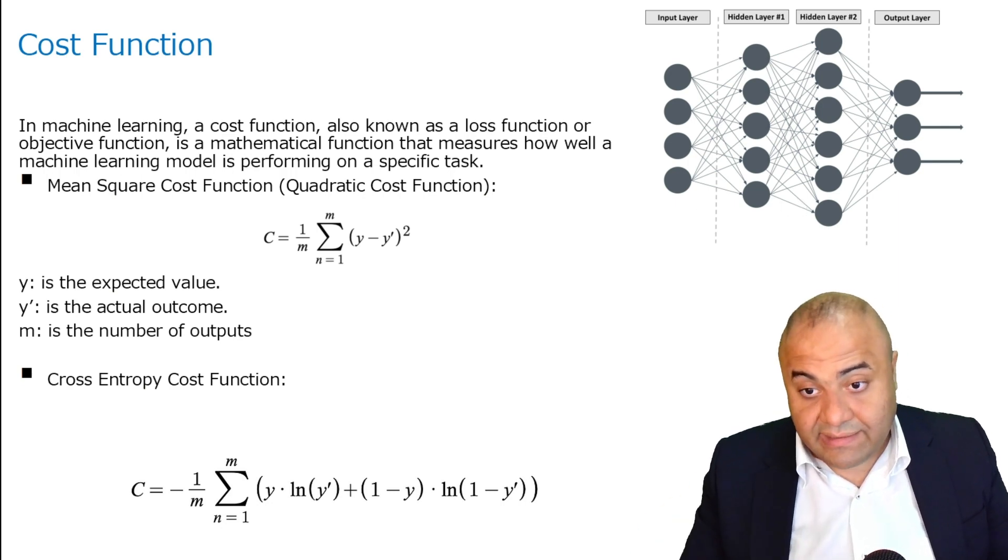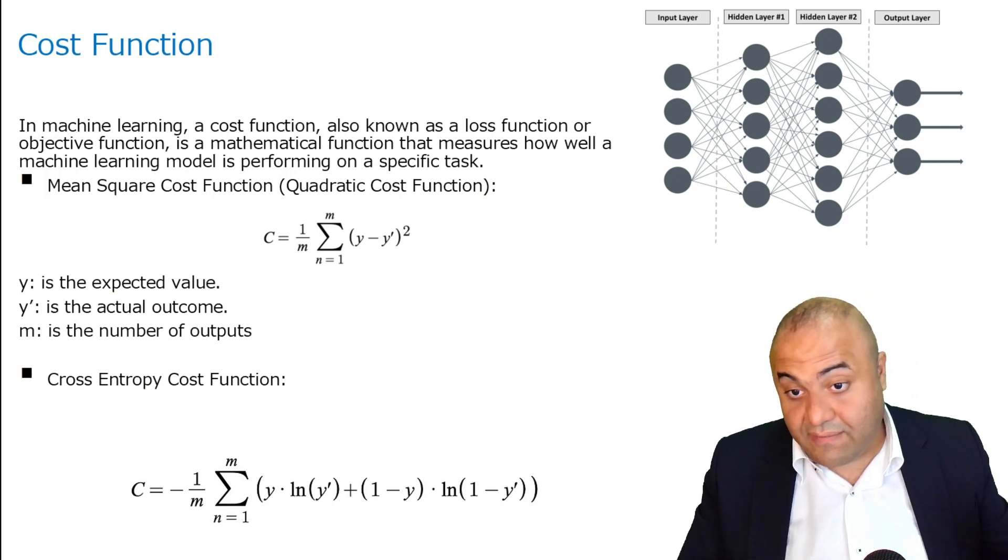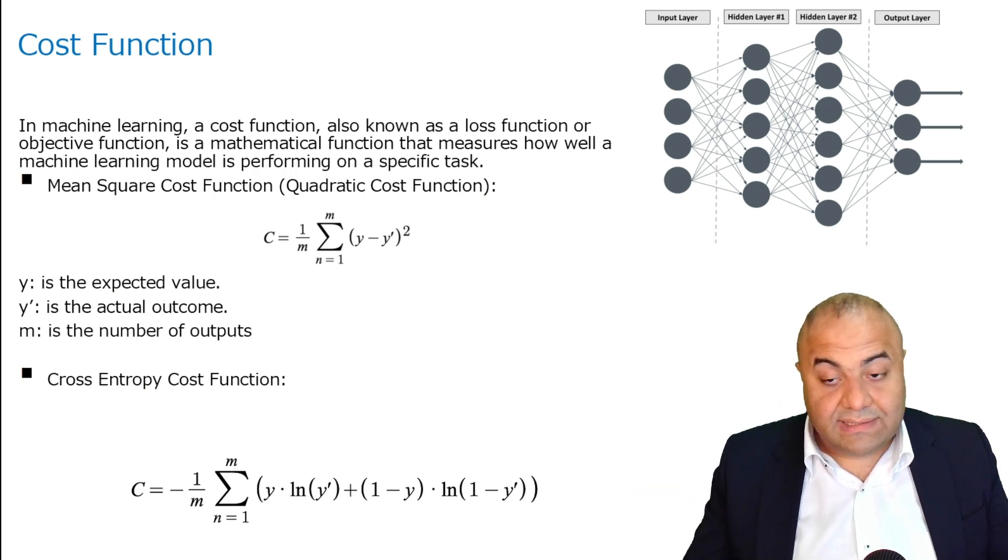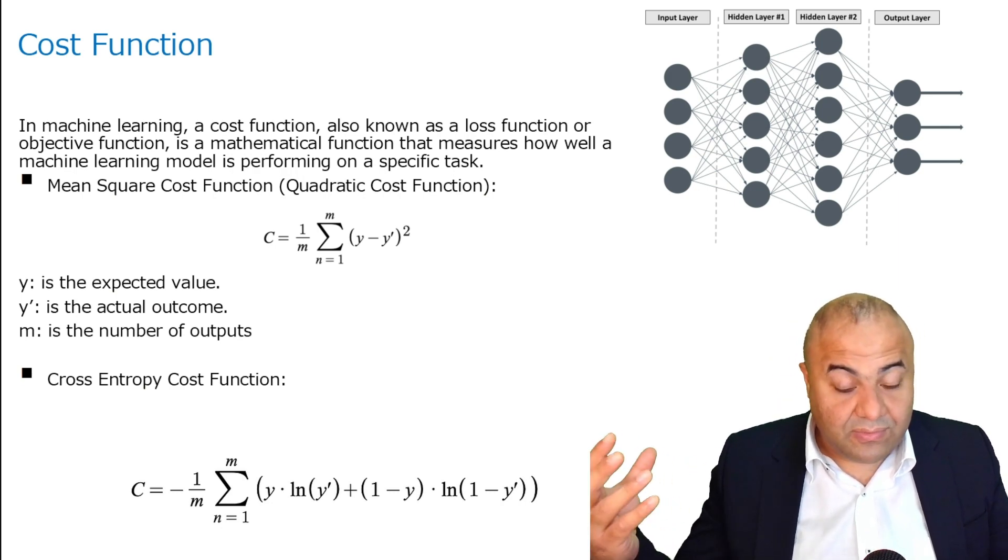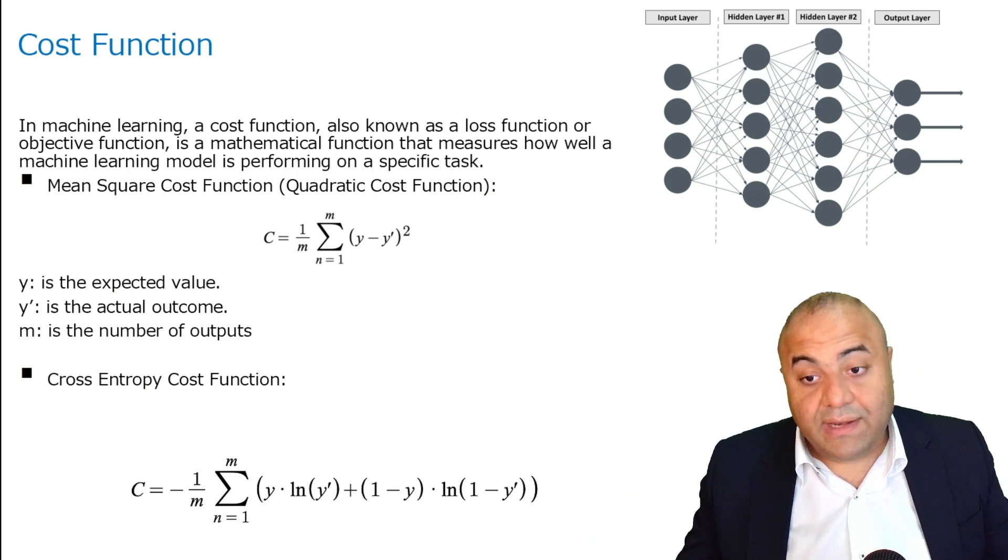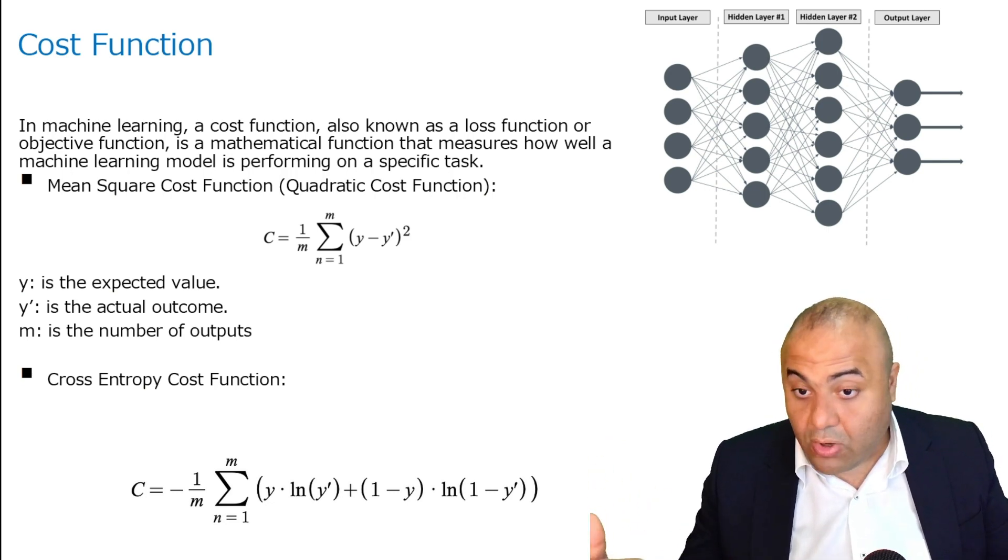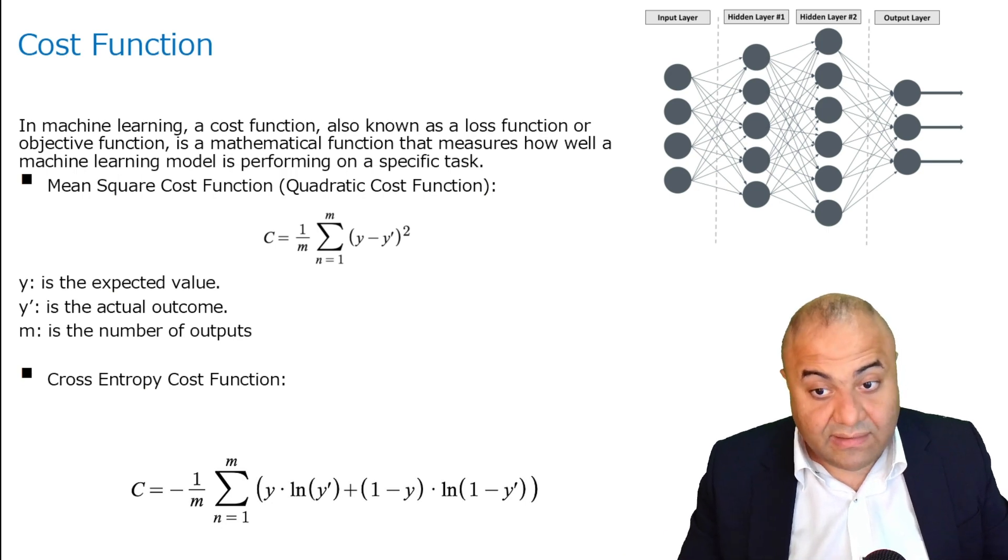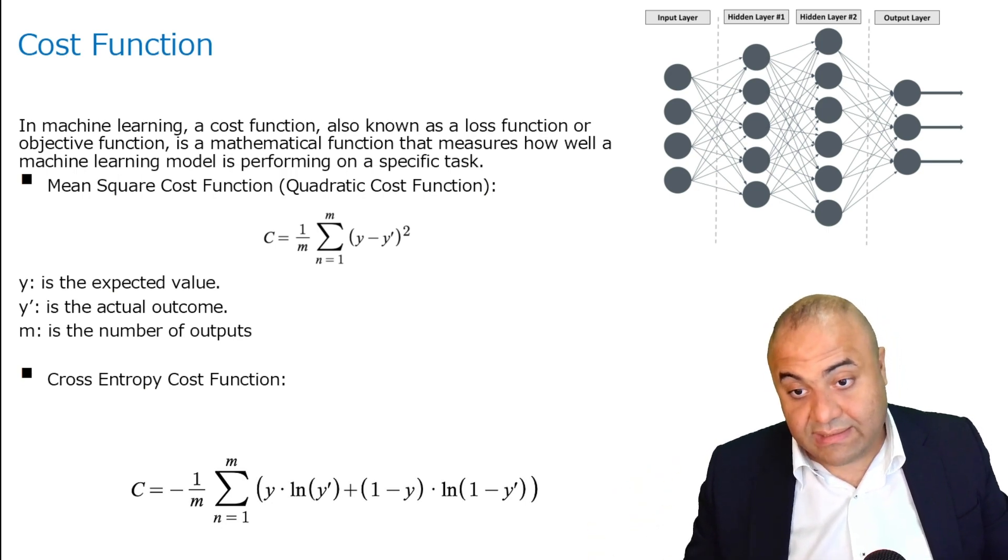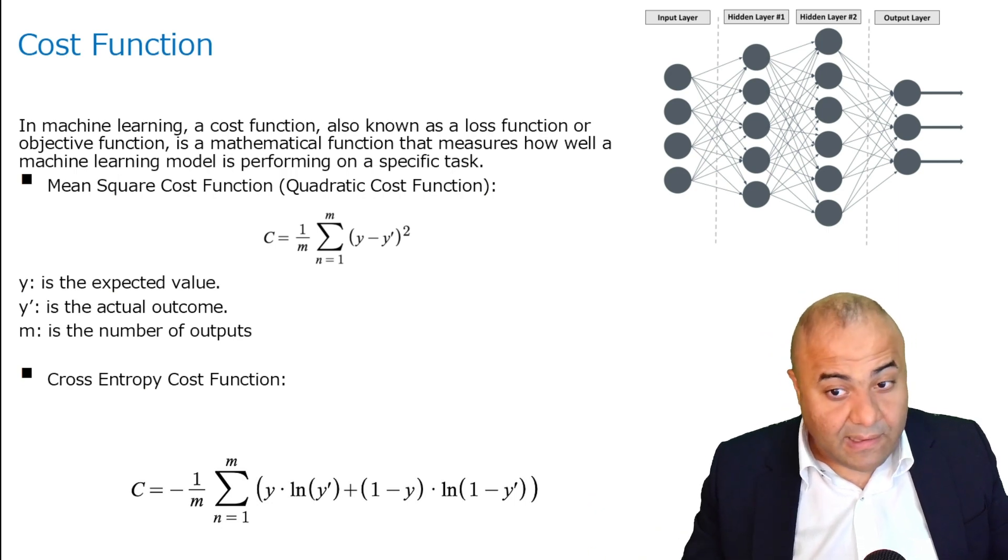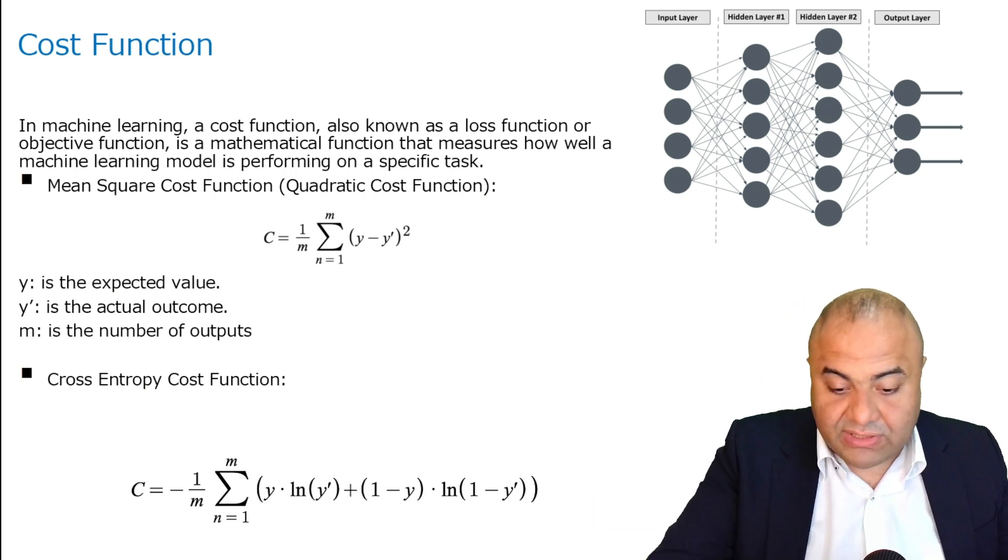For example, if we have an input layer of an image of a dog and the result was, a dog should be 1 and the cat should be 0. If we have the opposite, that means the weight has to be updated in order to match this output, which should give us a dog because the image is a dog.